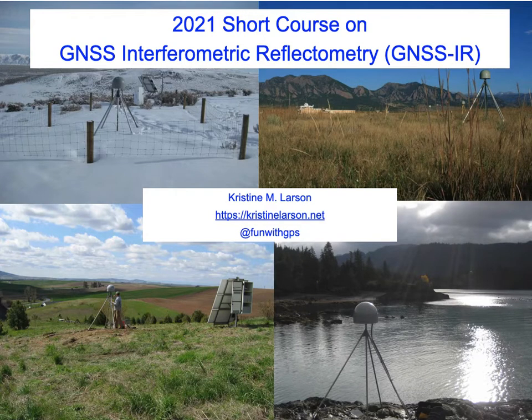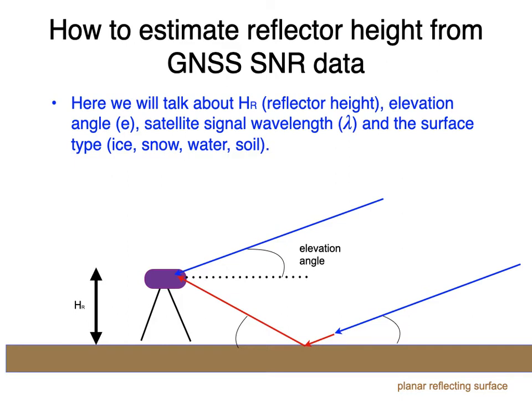Welcome to this video on GNSS IR — how to estimate reflector height from GNSS data. I'm going to use concepts from the previous video, so I'll be referring to reflector height, elevation angle, the satellite signal wavelength lambda, and briefly discussing surface type.